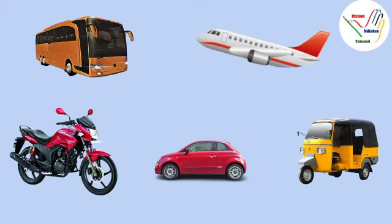Look at this picture. Here is a bus, aeroplane, car, auto, and bike. But bus, car, bike, auto, and car — all of these are road vehicles. Aeroplane is flying in the sky.